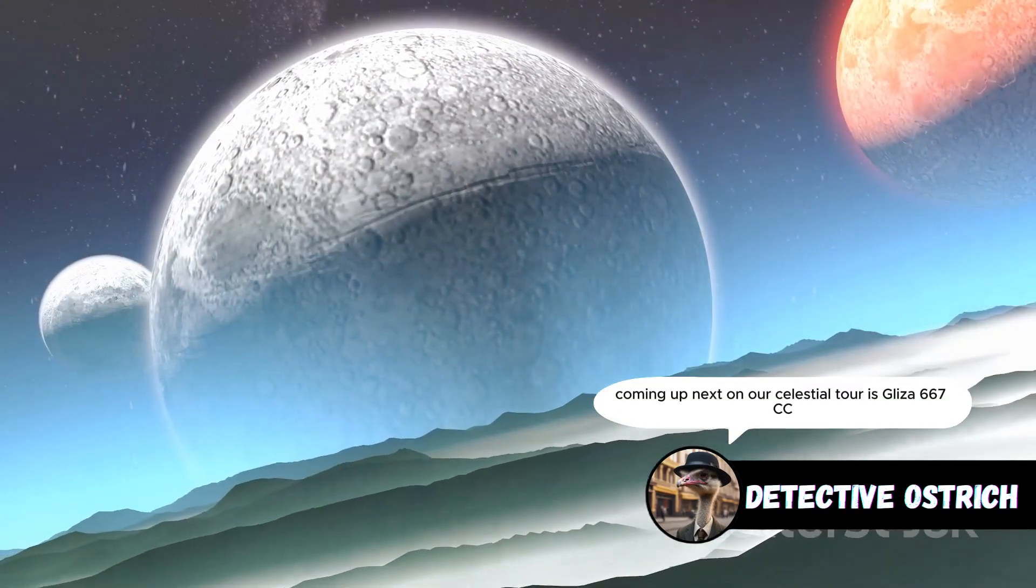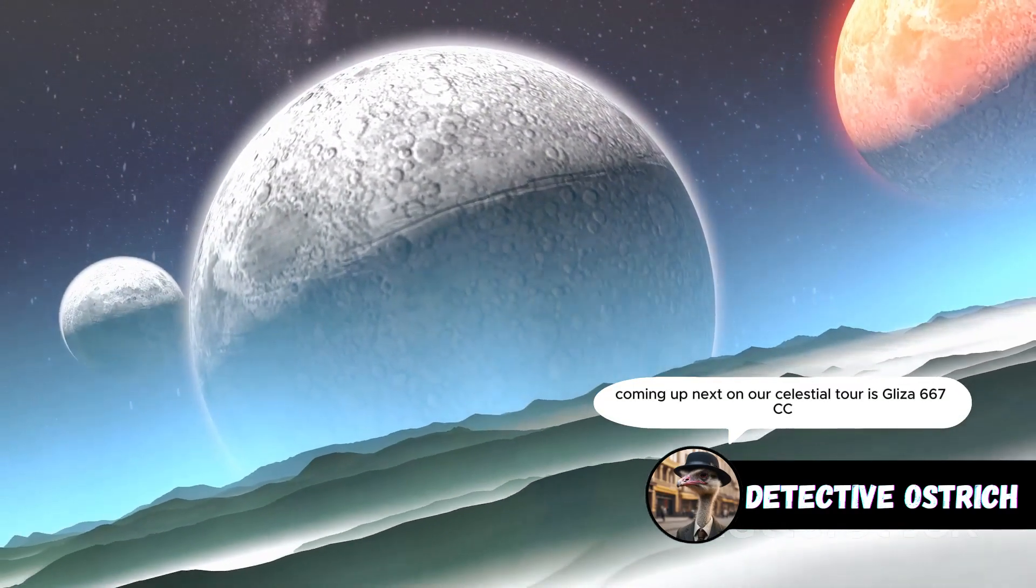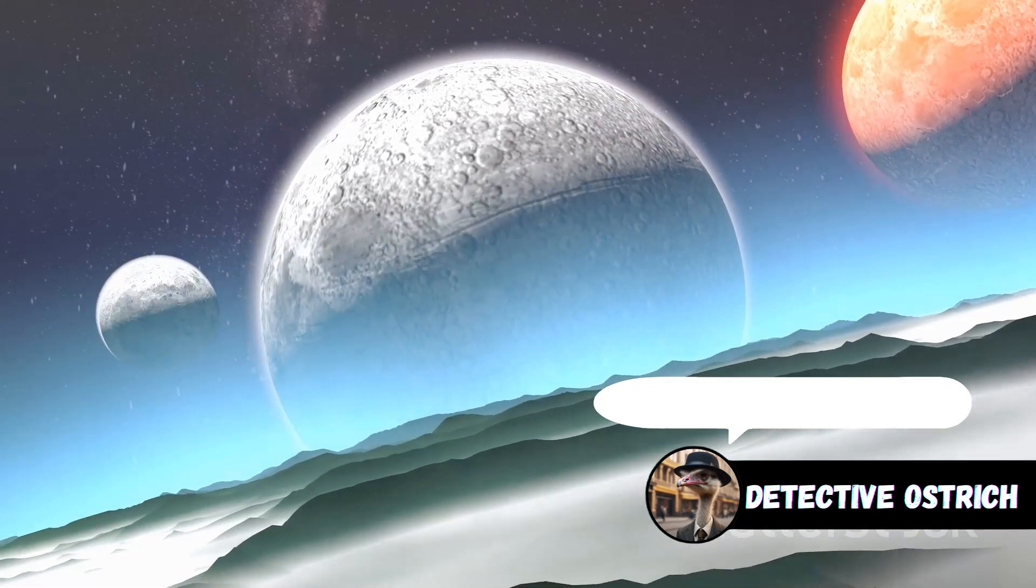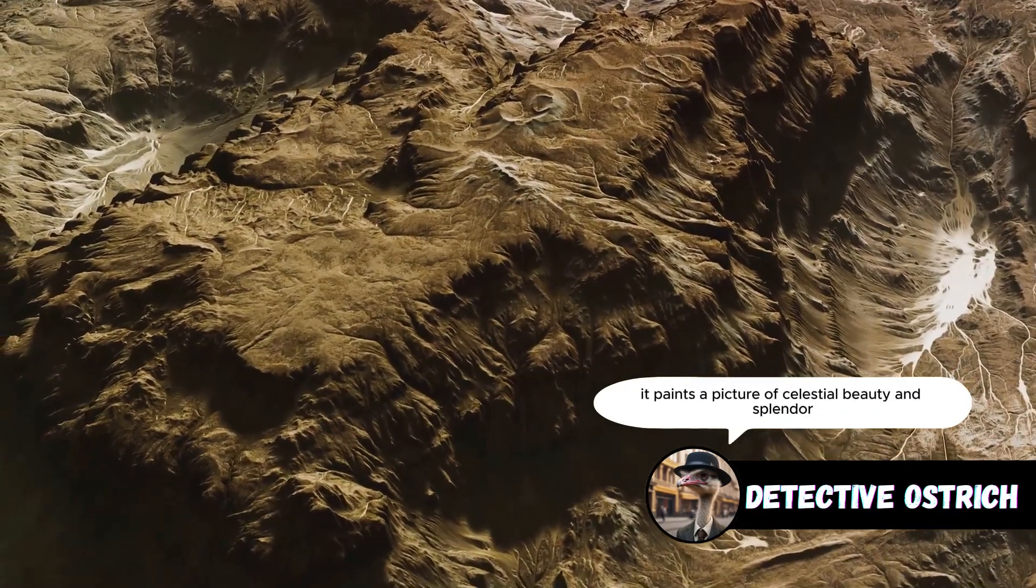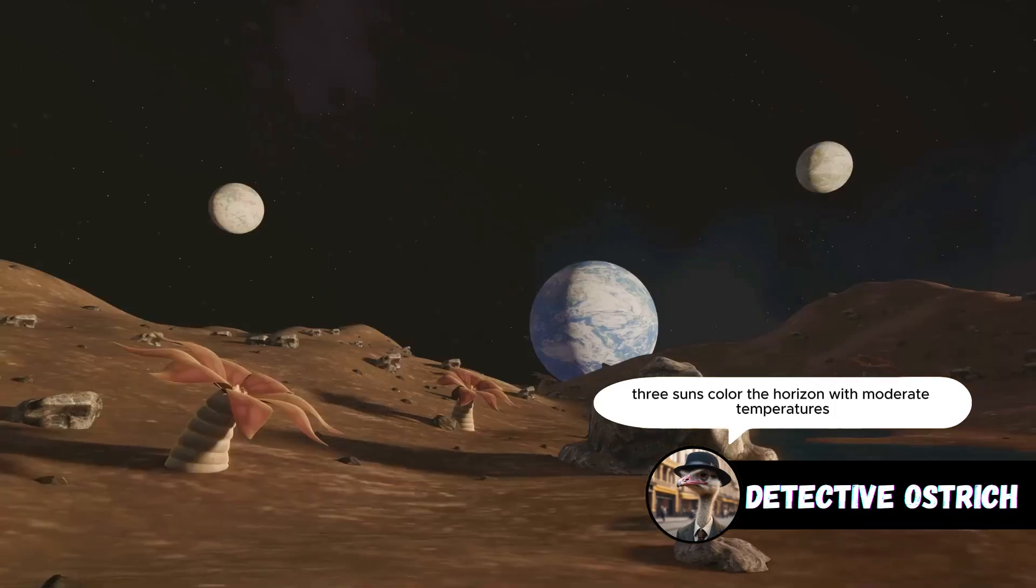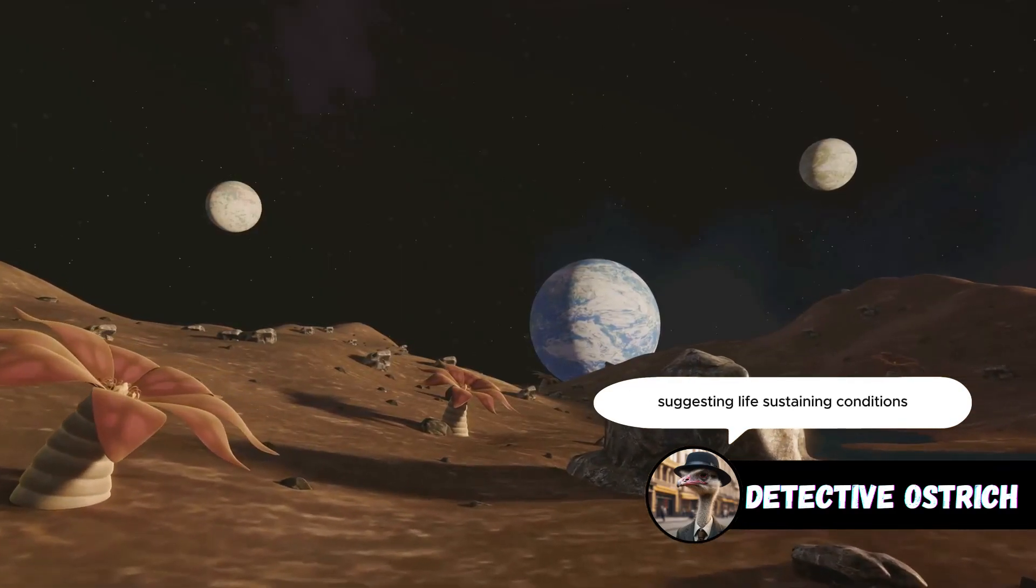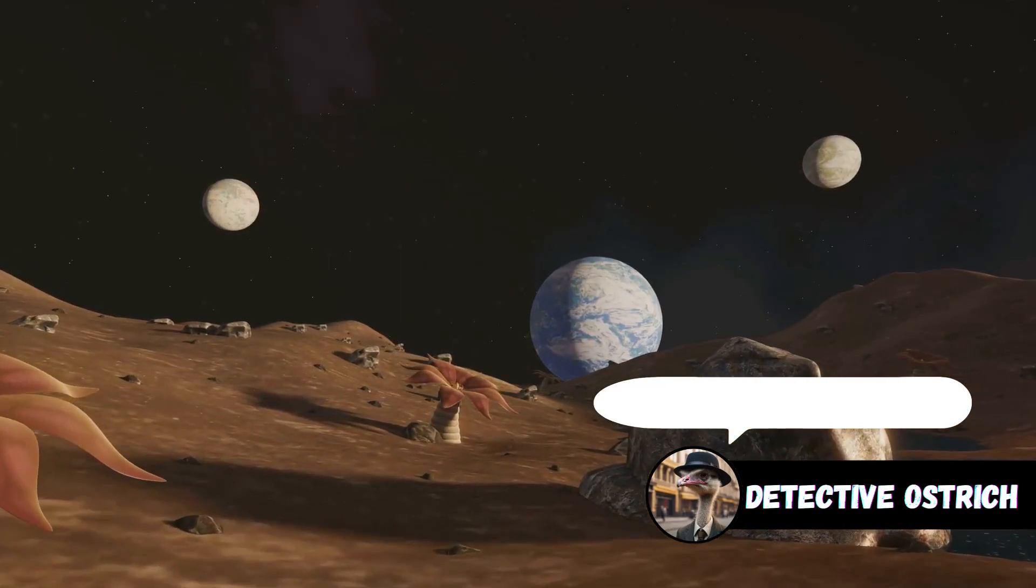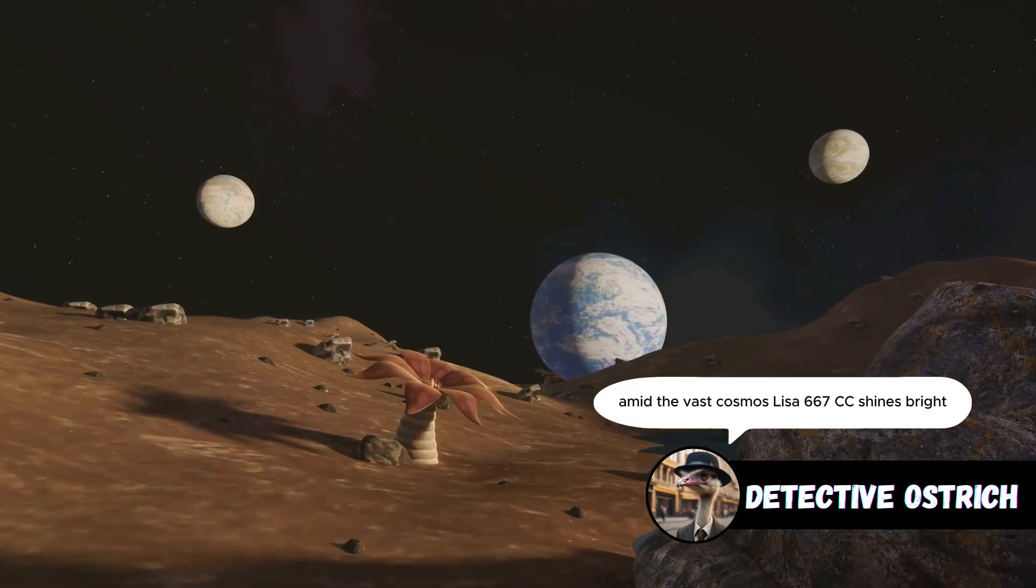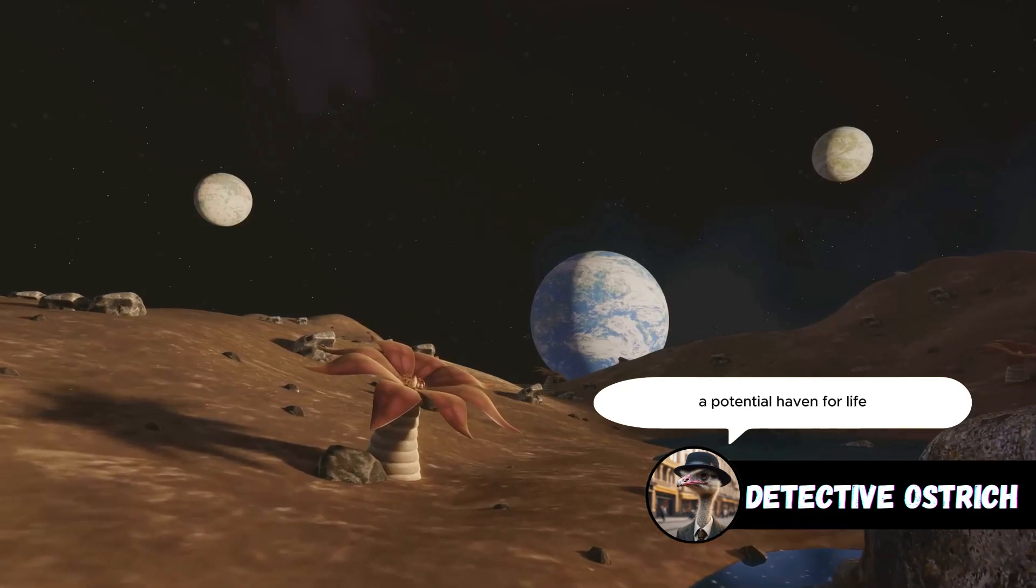Coming up next on our celestial tour is Gliese 667cc, an exoplanet of wonder and curiosity. Nestled in a triple star system, it paints a picture of celestial beauty and splendor. A ballet of stars, three suns color the horizon with moderate temperatures suggesting life-sustaining conditions. Amid the vast cosmos, Gliese 667cc shines bright, a potential haven for life.